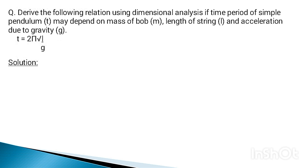Now let's move on to our next problem: derive the following relation using dimensional analysis. If the time period of a simple pendulum T may depend on the mass of the bob m, the length of the string l, and the acceleration due to gravity g, derive the relation T = 2π√(l/g).